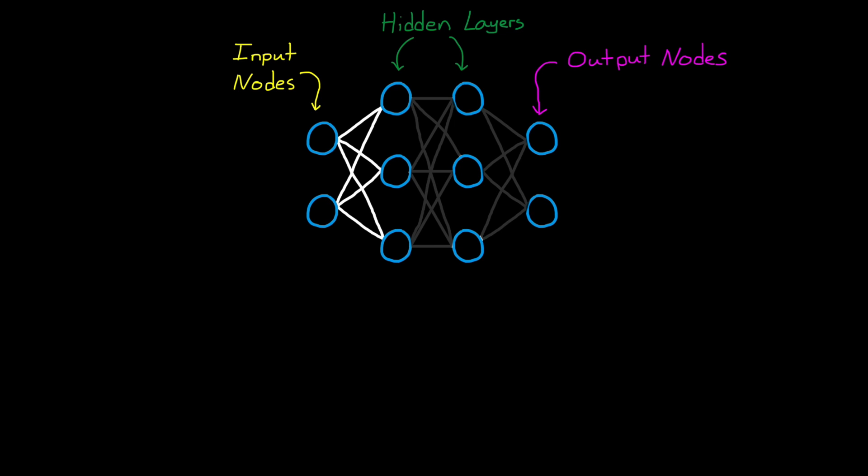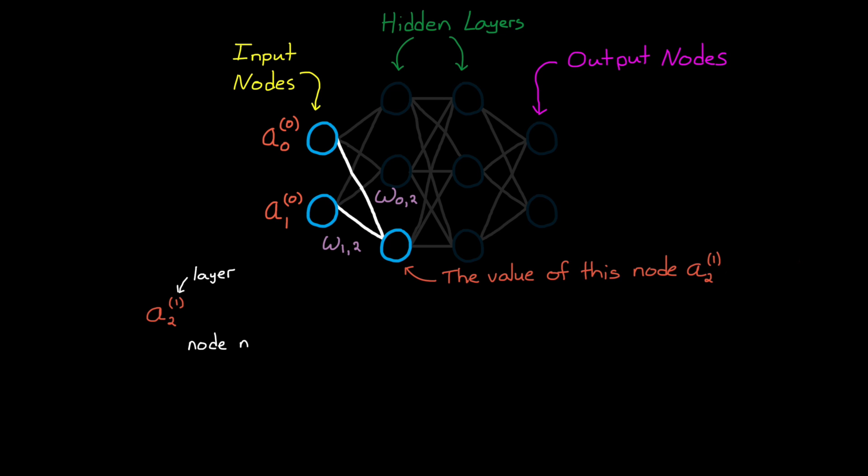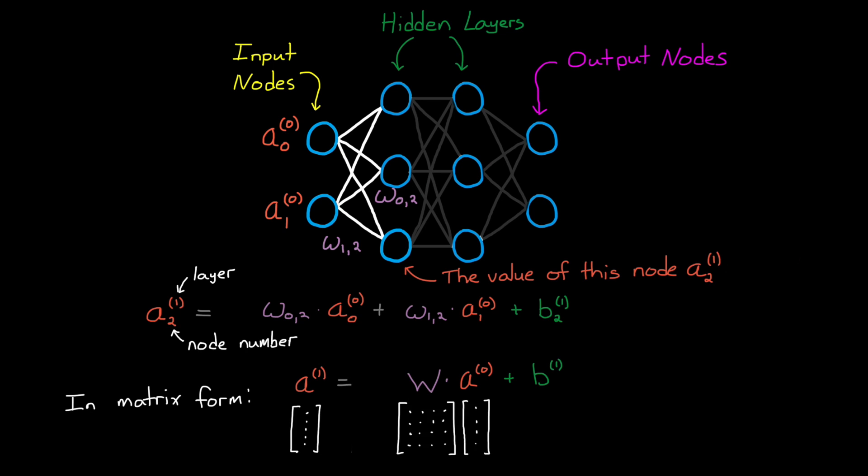With a fully connected network, there is a weighted connection from each input node to each node in the next layer, and then from those nodes to the layer after that, and then again until the output nodes. The value of a node is equal to the sum of every input node times its respective weighting factor plus a bias. And we can perform this calculation for every node in a layer, and then write it out in a compact matrix form as a system of linear equations.